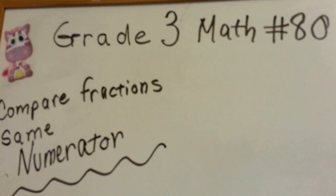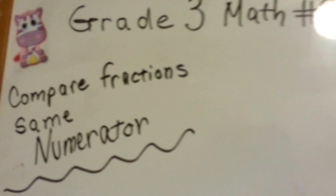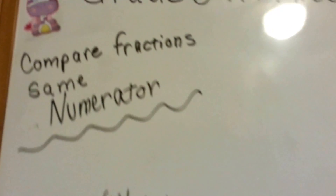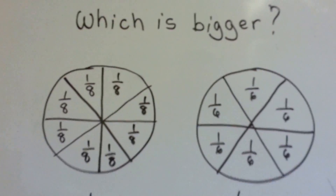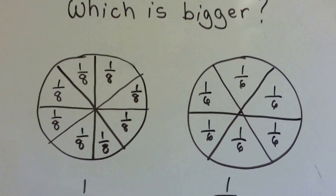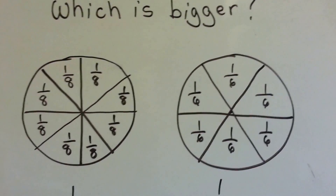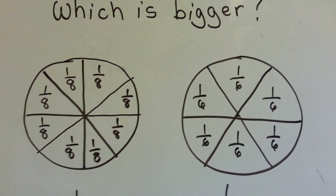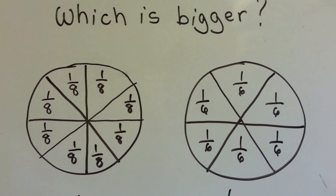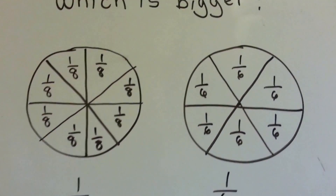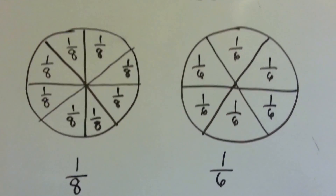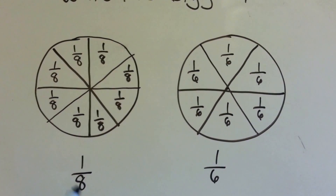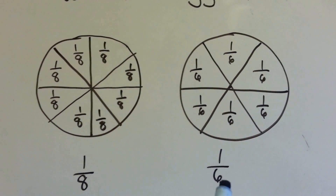Grade 3 math number 80: Compare fractions with the same numerator. We've got these two circles here. This one is broken up into eighths, and this one's broken up into sixths. So which would you say is bigger, 1 eighth or 1 sixth?